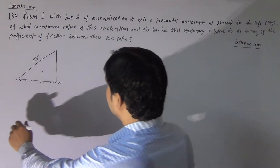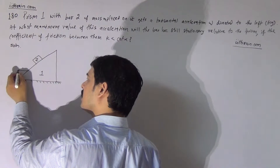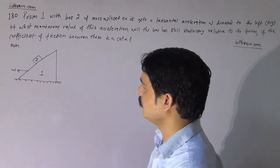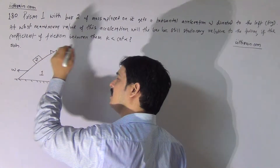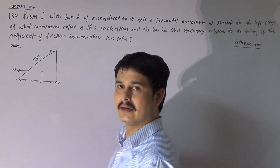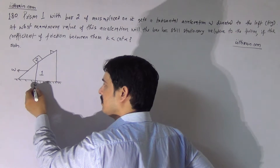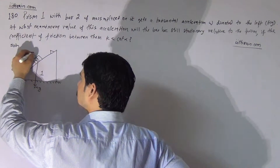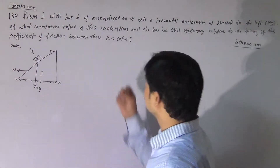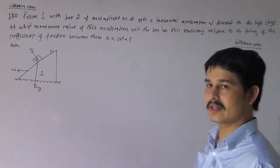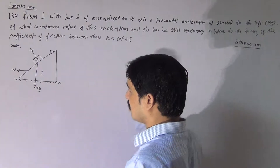According to the given problem, the prism is moving to the left with acceleration W. If we place our observer on the prism, then in that non-inertial frame the bar will experience certain forces: the first is mg, the second is the normal reaction by the floor, and the third is the pseudo force.